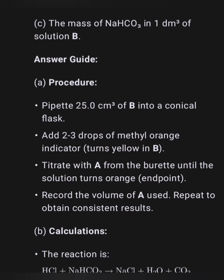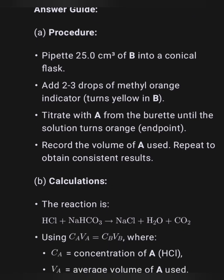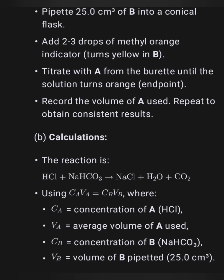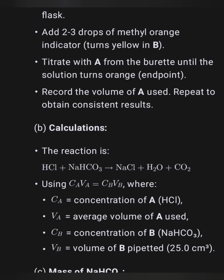Here is the procedure: prepare 25 cm³ of B in a conical flask, add two to three drops of methyl orange indicator — it will turn yellow in B. Then titrate from the burette, adding solution A onto the solution until the colour changes. Record the volume of A used and repeat to obtain consistent results.